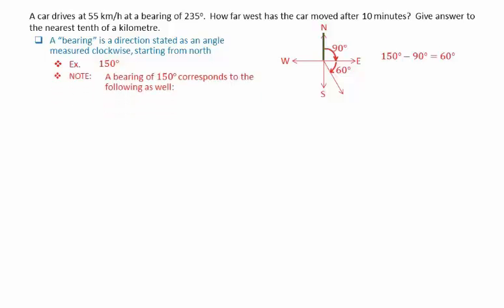Note, a bearing of 150 degrees can be represented in other ways as well. We can say south 30 degrees east. This means that from south, you move 30 degrees towards the east. It can also be written as 30 degrees east of south.